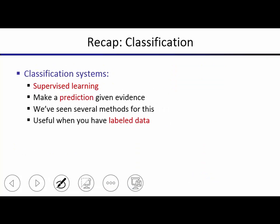Classification is the first thing we've looked at in machine learning. It's an example of supervised learning: you get data consisting of an input x and a label y that you'd like to predict. For training data, you're told for every input what the label y is — that's the supervision. We've seen Naive Bayes, Perceptron, Nearest Neighbors, and Dual Perceptron. Supervised learning is useful when you have labeled data.